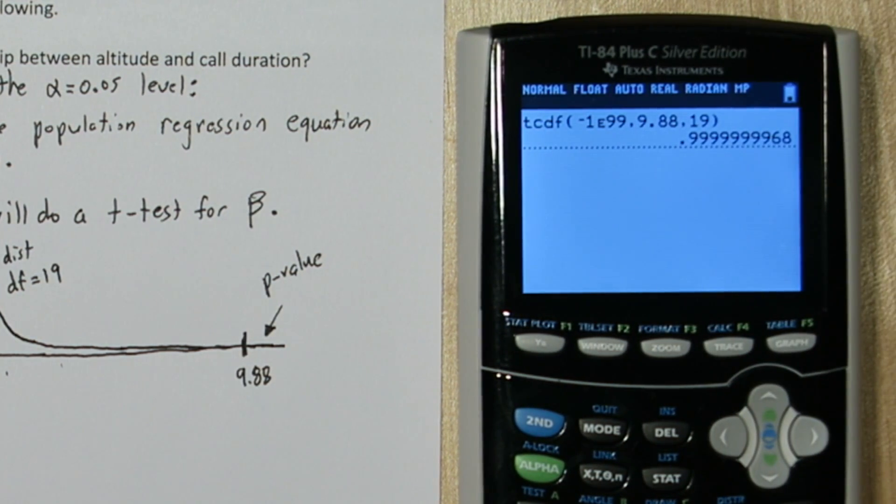Alright, there we go, a number really close to 1. So we'll do 1 minus this value. And there's our p-value, it's in scientific notation.